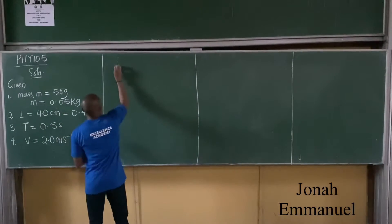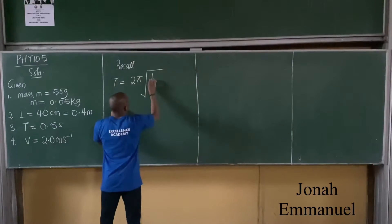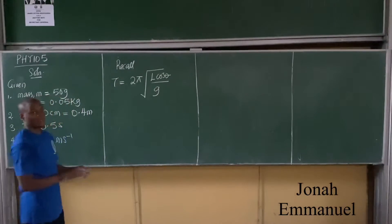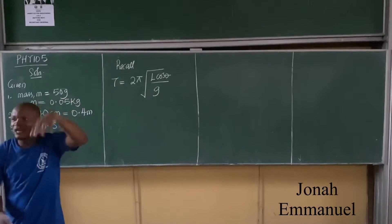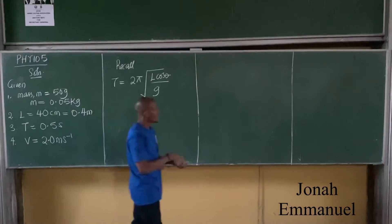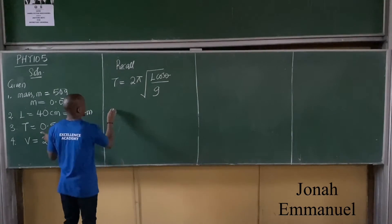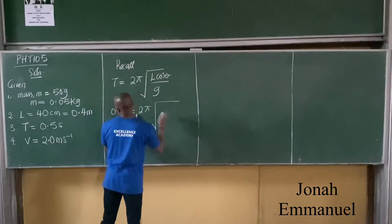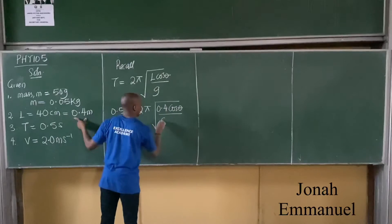We have to find half angle. We know that we recall, T is equal to 2π square root of L cos theta over G. But here's the thing, there's no M here, is there V here? No. But check, is there a particular formula that involves all of this? Check.